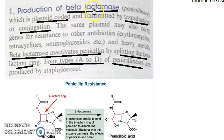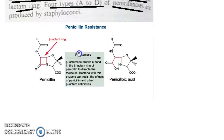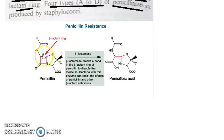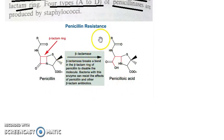First, how does it become resistant to penicillin? Because of the beta-lactamase enzyme. The bacteria can produce beta-lactamase enzyme, which breaks the beta-lactam ring of penicillin, causing it to become inactivated. This is the beta-lactamase activity of the bacteria.